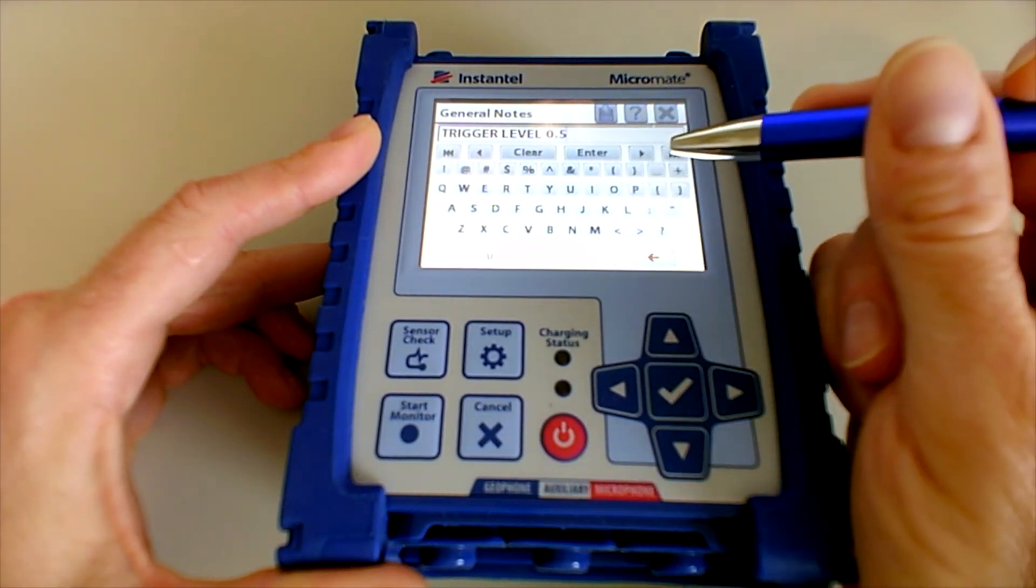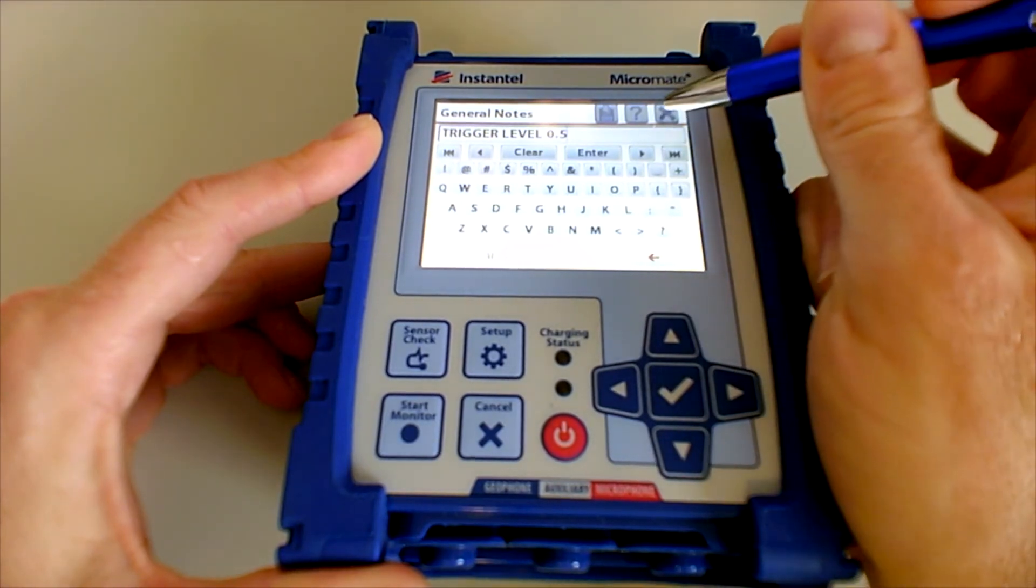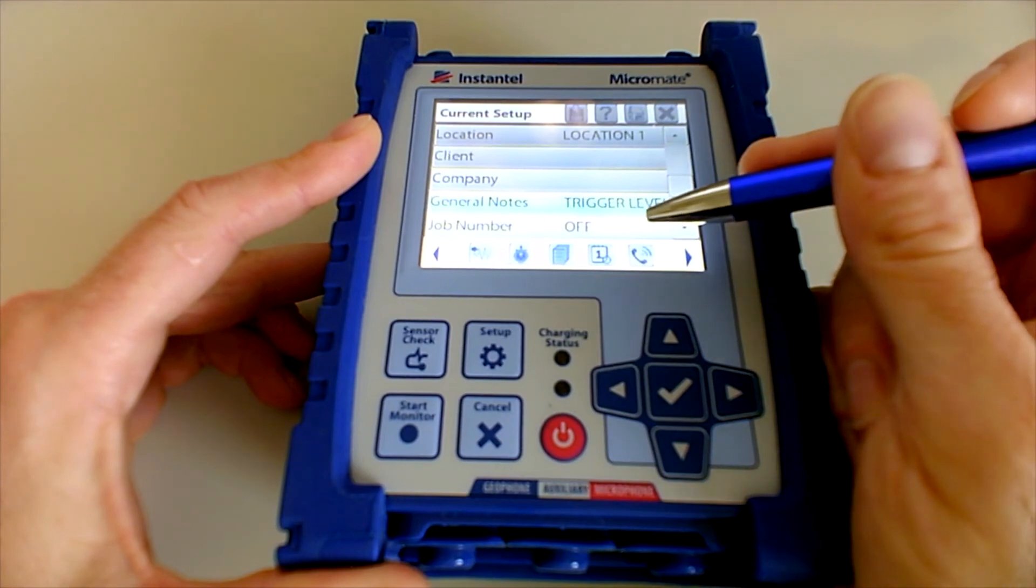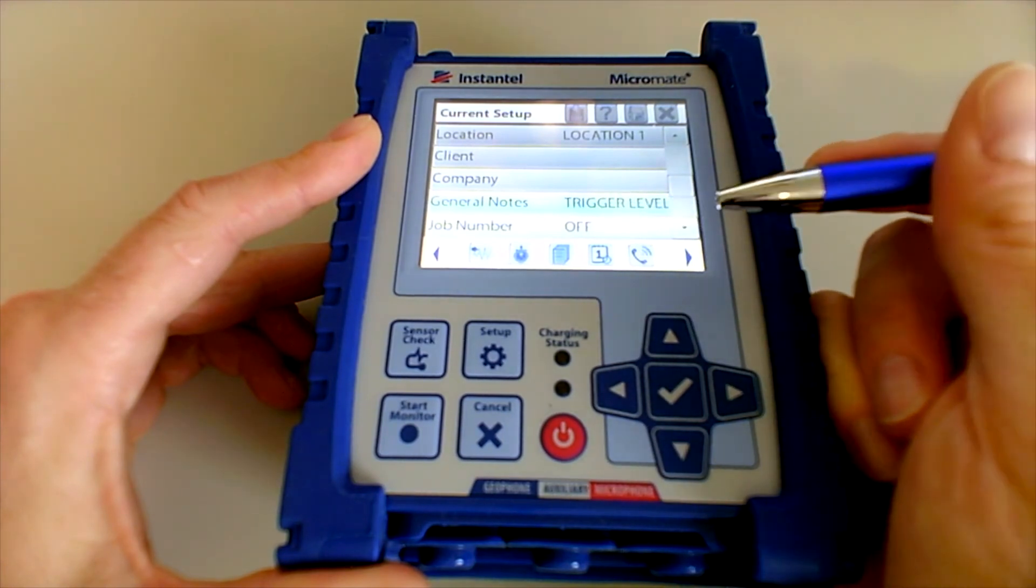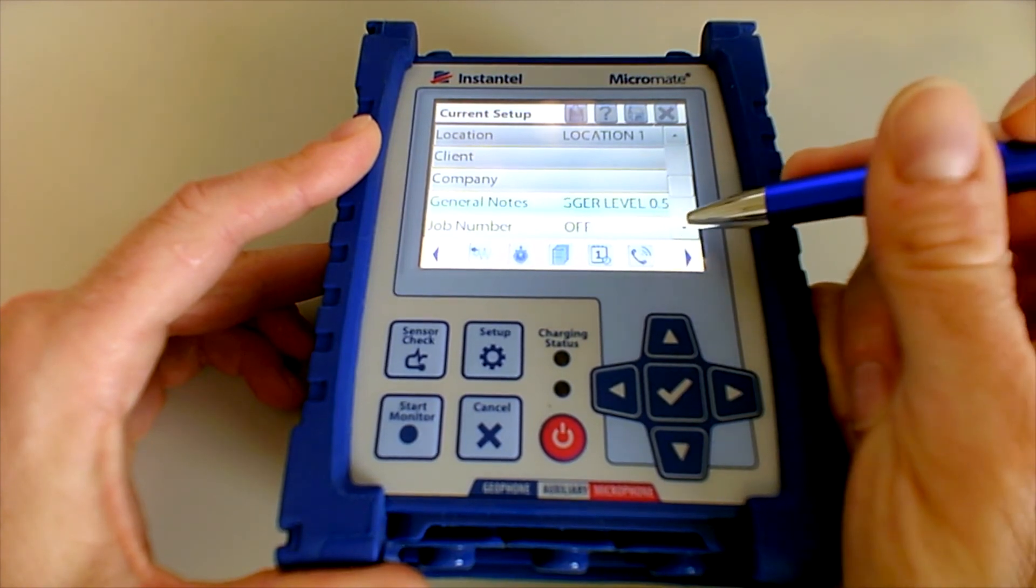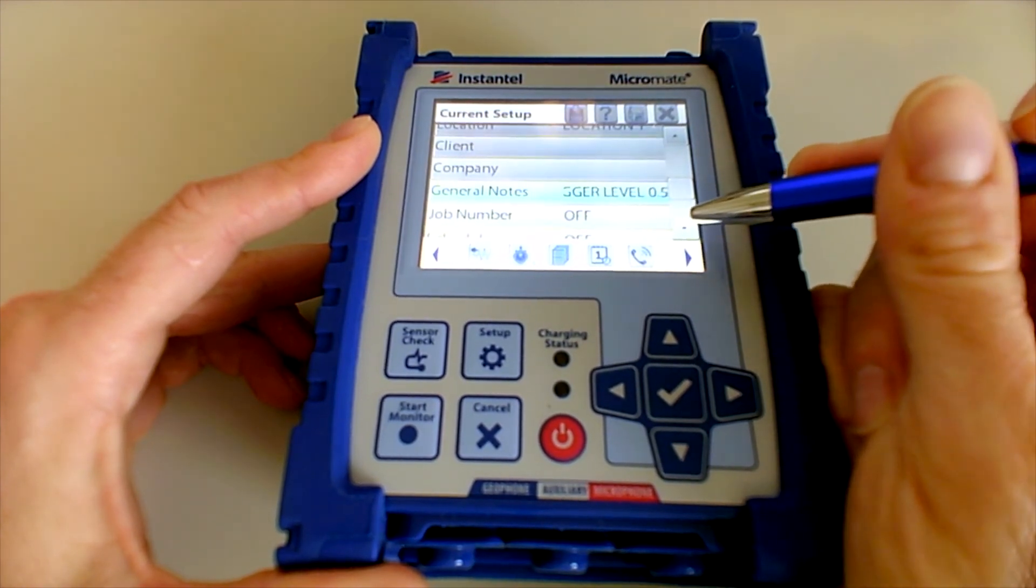And you can put whatever you'd like to put into that field. I'm not going to make any changes in this case, so I'm just going to go ahead and X out. No changes are made. Down here, you also see where you have your job number. If you have a project number or job number, you can put that in there. That is your last notes option. Then you get into other features.